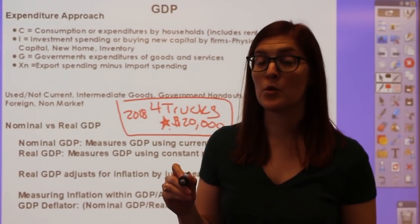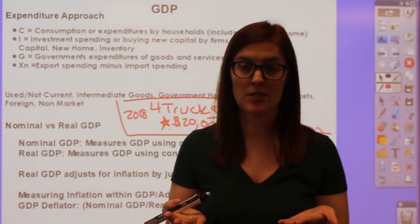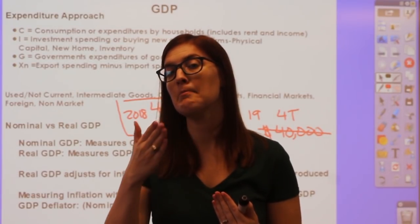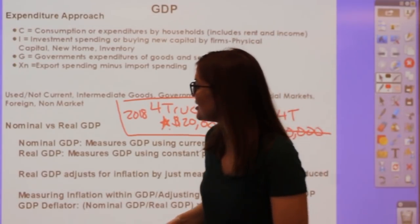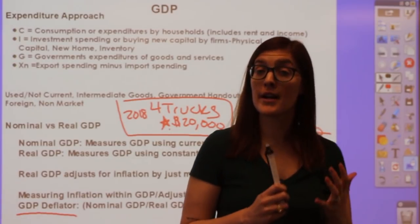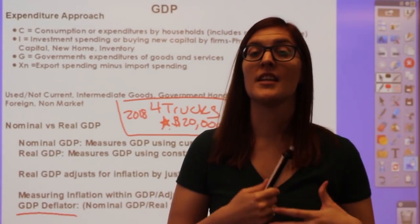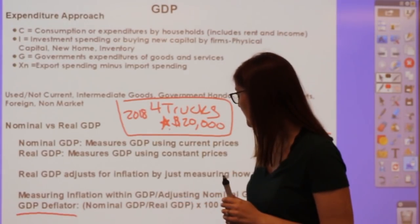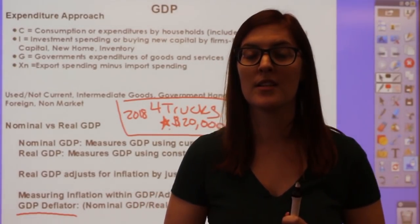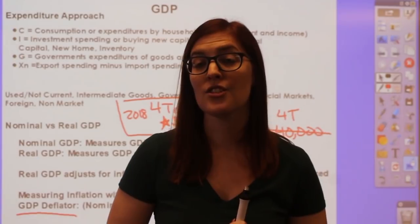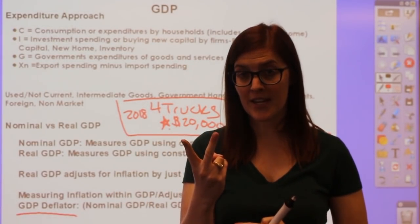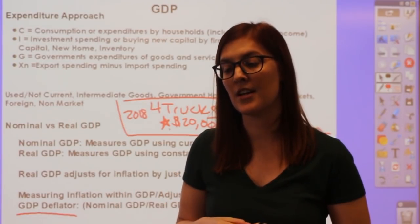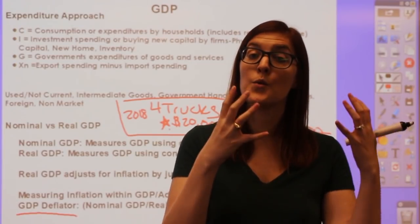Nominal GDP may go up because more was produced, because of inflation, or both—we can't distinguish. Real GDP shows just how much was produced. You can also measure the inflation within GDP using the GDP deflator: take nominal GDP divided by real GDP, multiplied by 100. You can also rearrange this formula to solve for real GDP: take nominal GDP, divide by the deflator, and multiply by 100—this removes inflation from nominal and gives you real GDP.